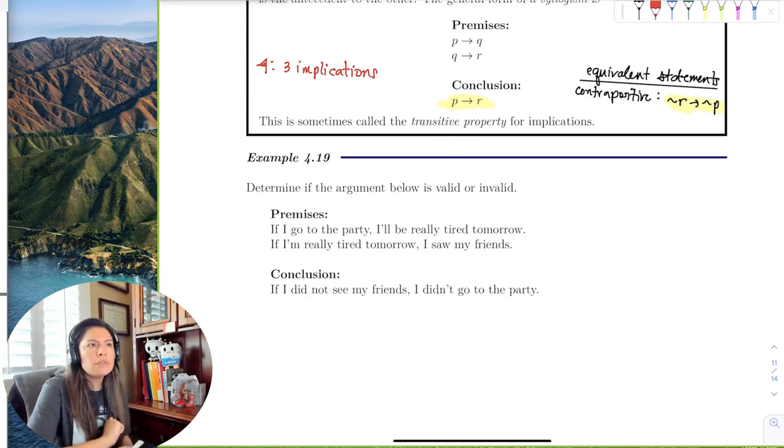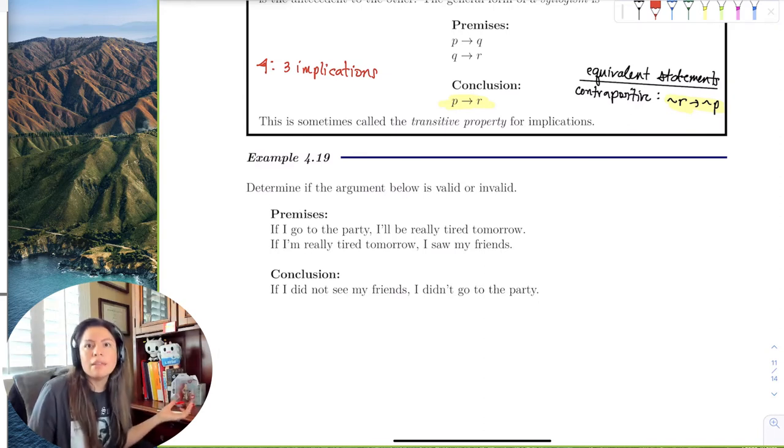So just if you see that it's if, then, if, then, if, then, go directly and see if it's a syllogism. If it's not, then it's not valid. It has to be either the contrapositive or the implication in order for the conclusion to be valid.